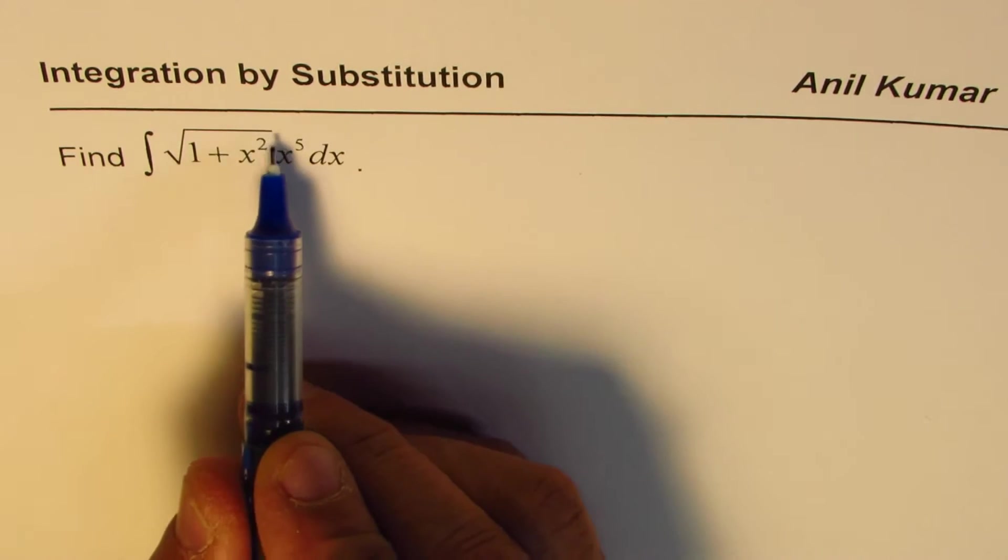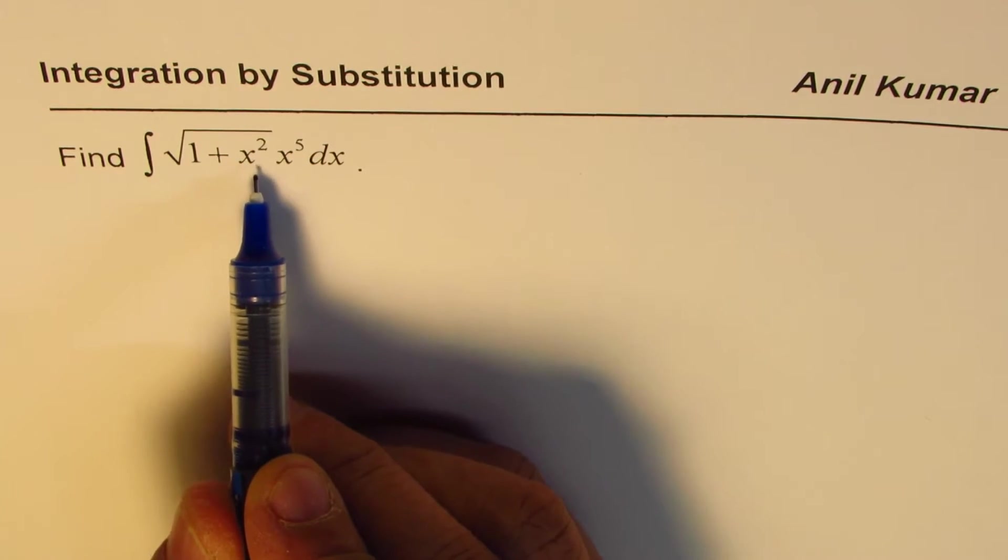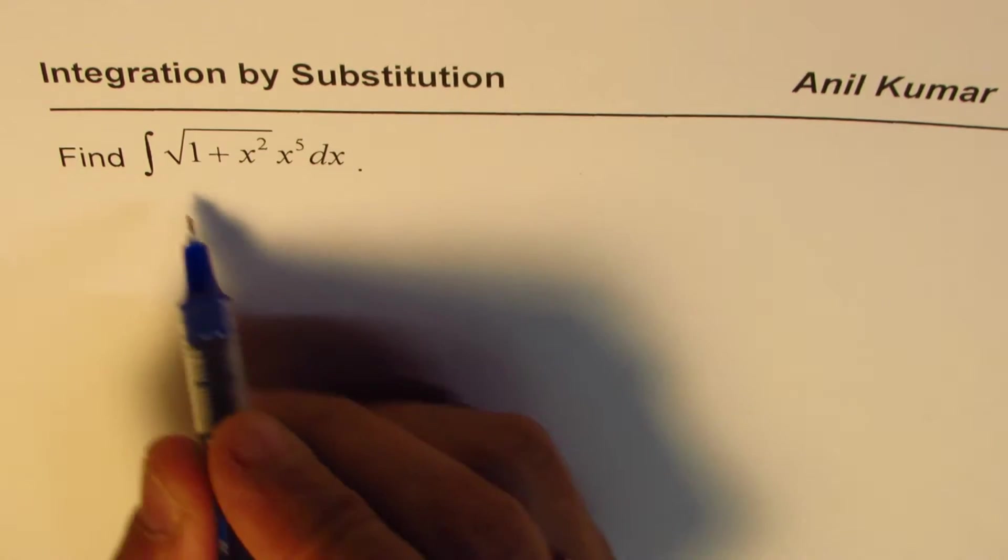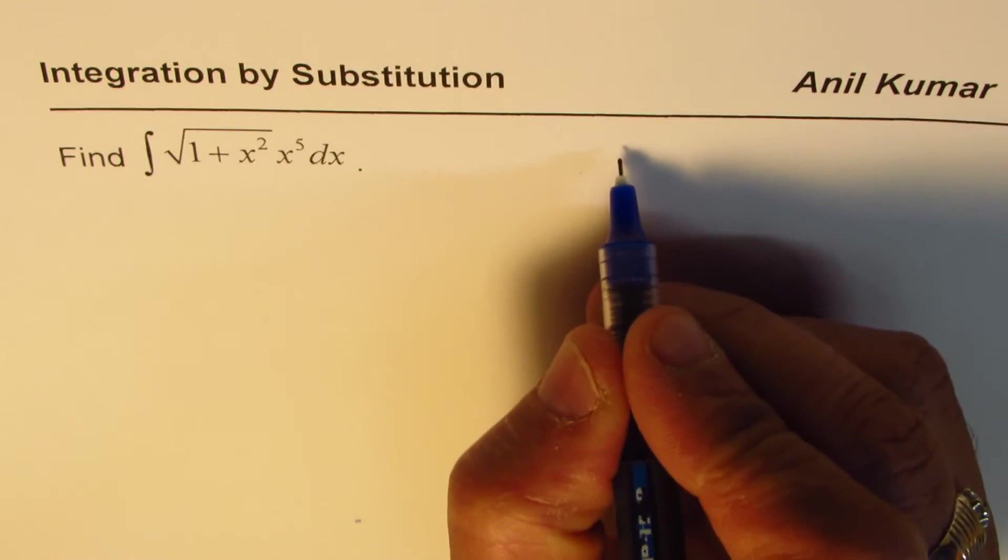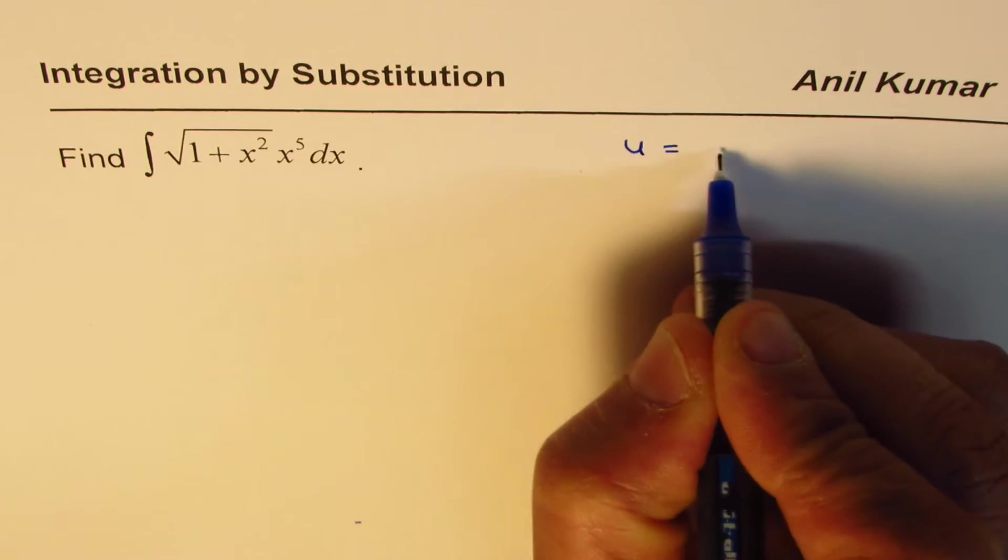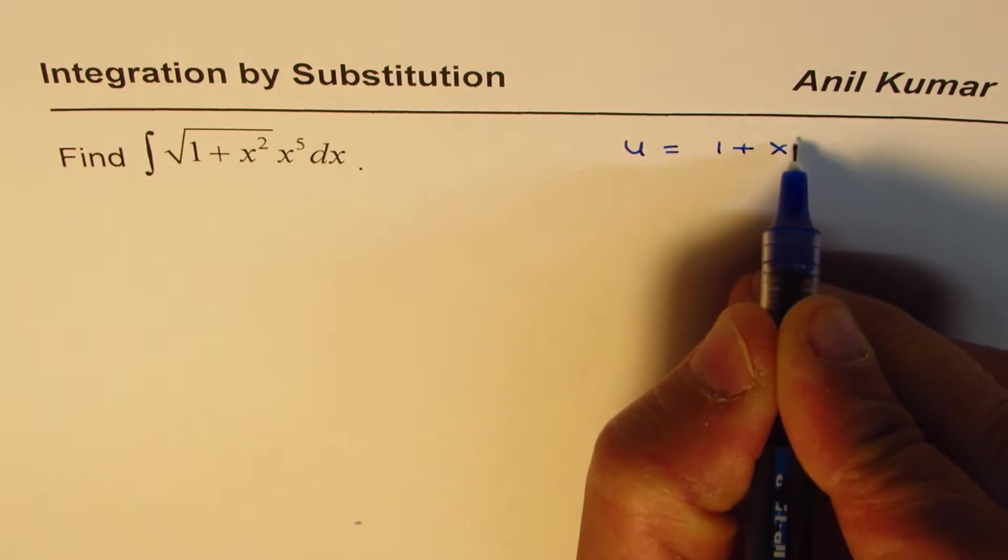First thing you see is the square root of something, so we could treat that something as a function to be substituted. We can say that u equals 1 plus x squared to begin with.